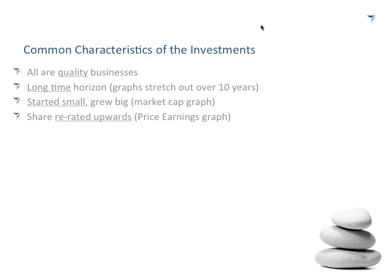You'll also notice they all started small. EOH's market cap started well below a billion. Capitec started at about a billion. Mr. Price's, let's call it 3 billion 10 years ago. Aspen, about 5 billion. Now they're well over a hundred billion, and all of them have exponentially increased. Where the share price is growing, the company is growing because in the long term, profits drive that. So you're looking for companies that are probably small — it's easier for a small company to become big than a big company to become bigger.